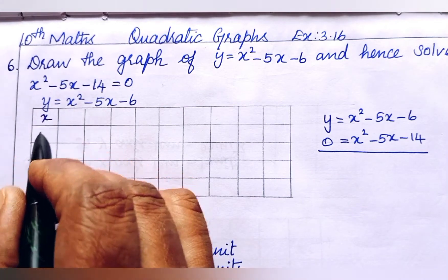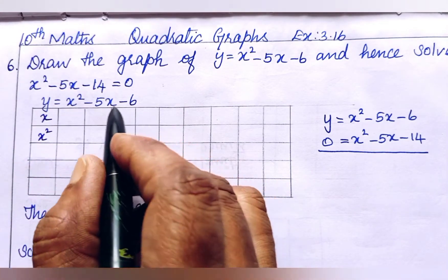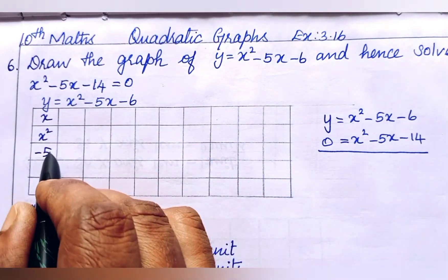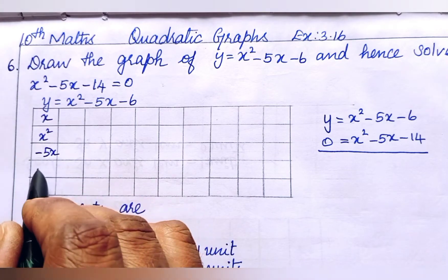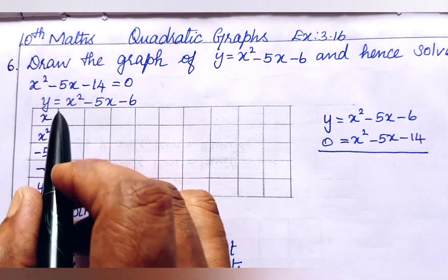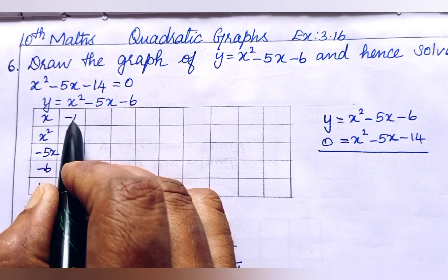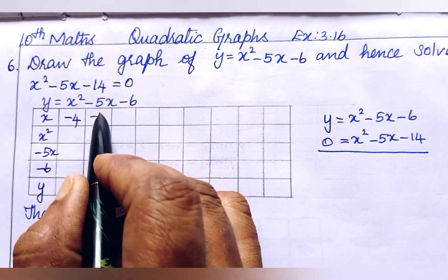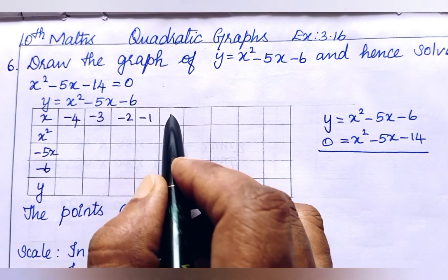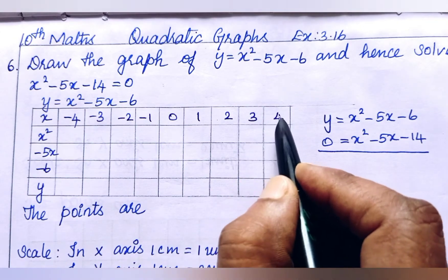First, we set up x values. We take x squared, then minus 5x, then minus 6. Adding all three rows we will get y. The x values range from minus 4 to plus 4: 0, 1, 2, 3, 4.